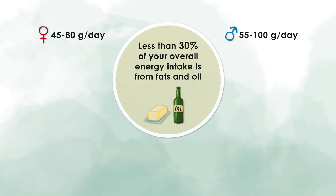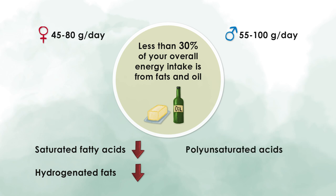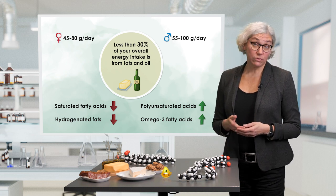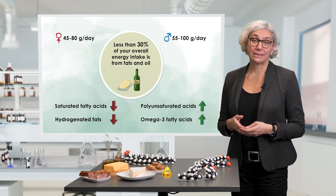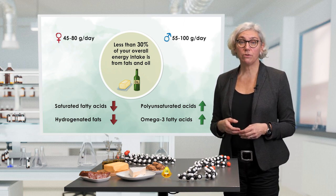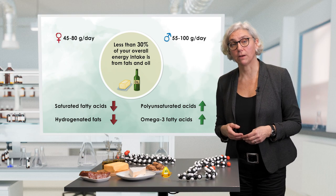Secondly, try to reduce the intake of saturated fatty acids in your diet, especially of hydrogenated fats. The same is recommended for trans fatty acids from hydrogenated fats. And last but not least, try to increase the amount of polyunsaturated fatty acids in your diet and especially the amount of omega-3 fatty acids. If you follow these recommendations together with a balanced diet and sufficient physical activity, this will help you to reduce your personal risk for suffering from the metabolic syndrome.